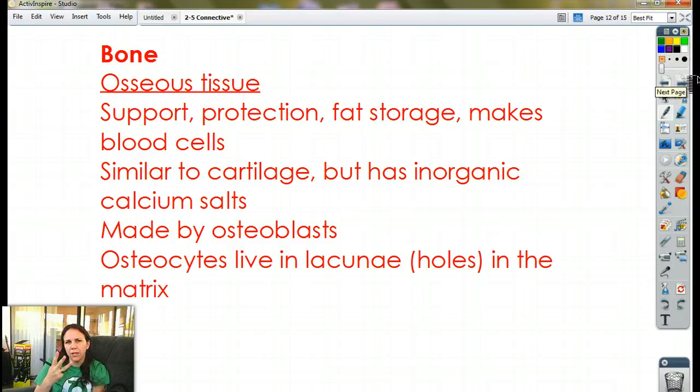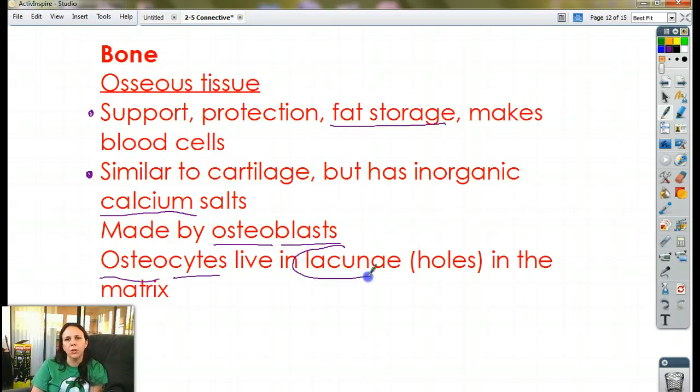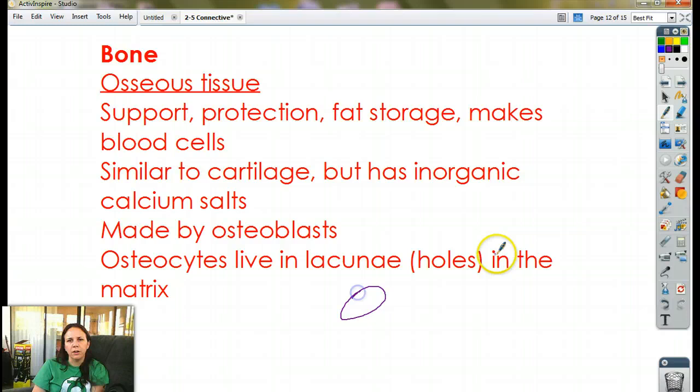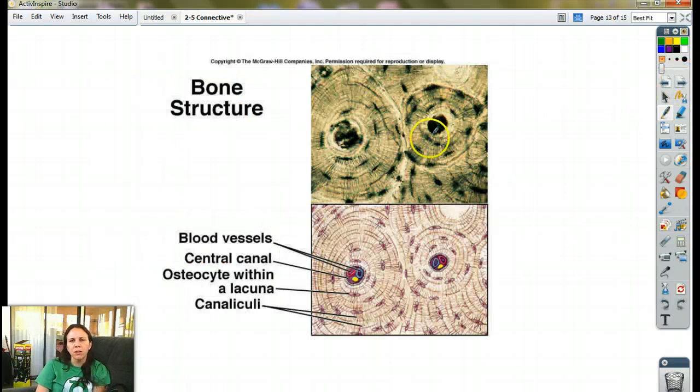Okay, third type of connective tissue, bone, otherwise known as osseous tissue. Bone supports, we know that, protects. This one, you may not know, stores fat. Your bone can actually store fat inside. Your bone also makes blood cells for you. It's very similar to cartilage, but it has inorganic calcium salts, which solidify and make your bones hard. They are made by osteoblasts. So blast means to make, osteo means bone. Osteocytes, mature bone cells, they live in what are called lacunae, or lacuna if you're talking about one of them. If you're talking about more than one, you add the E on the end, it becomes lacunae. These are little holes that are in the bone matrix, and inside you will see the bone cell. So let's see what that looks like.